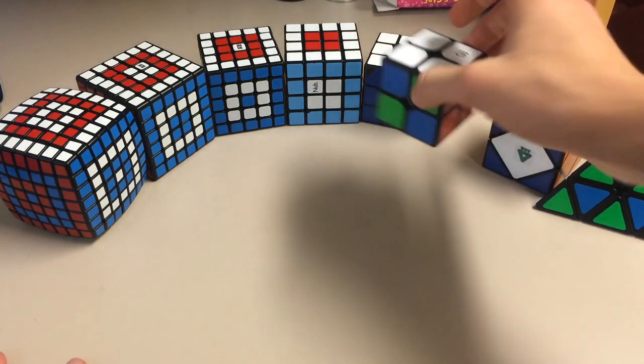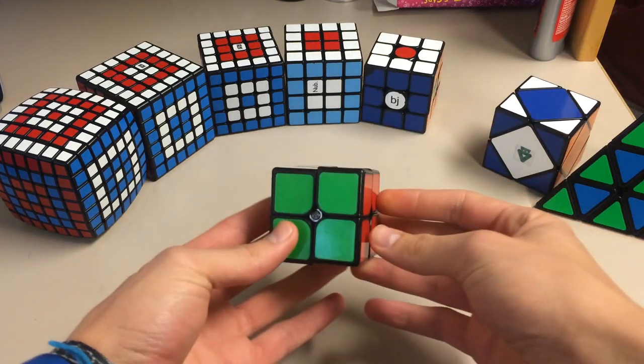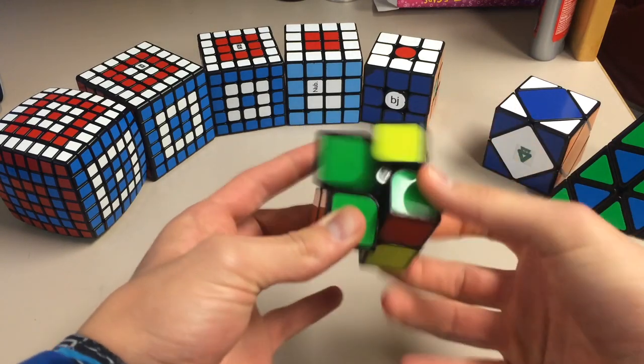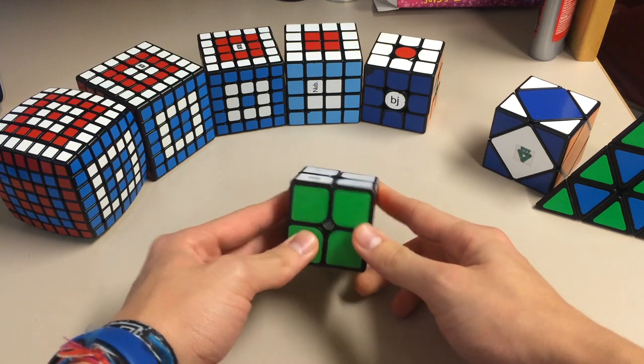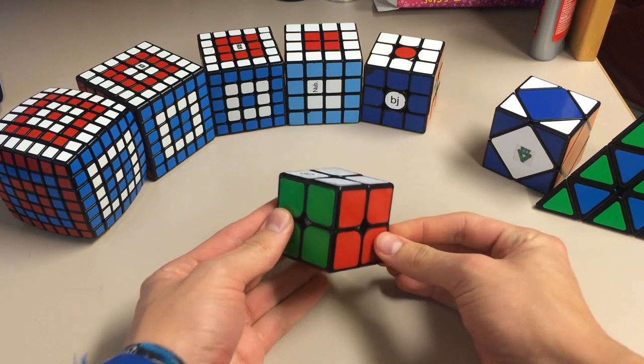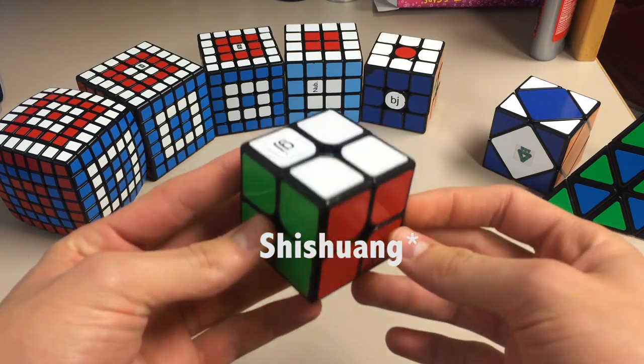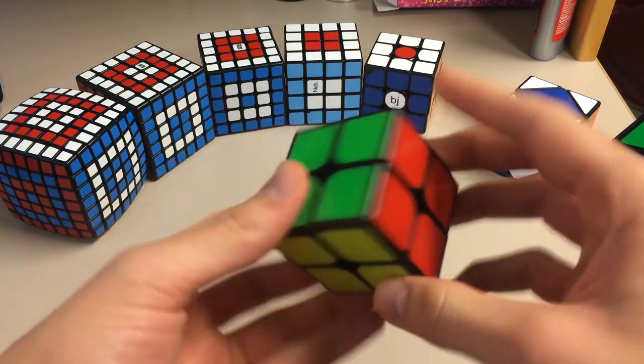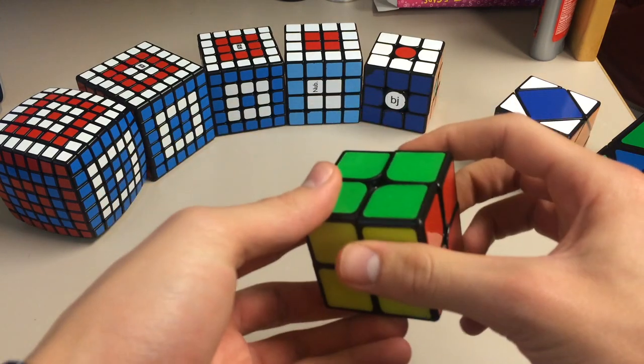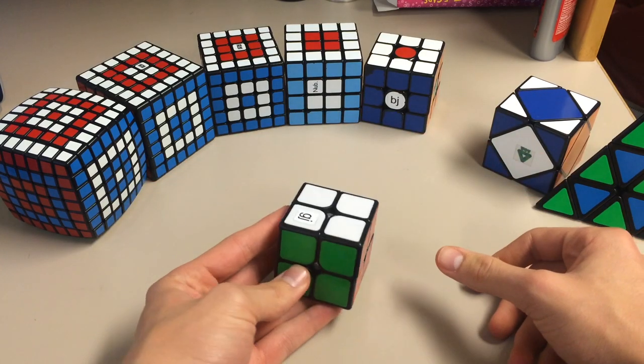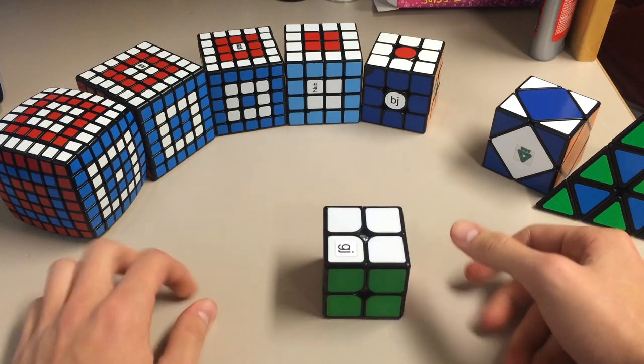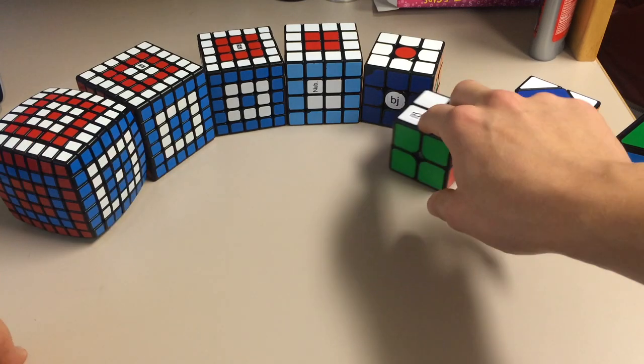I'm going to start with 2x2. My 2x2 main is the Fangshi Shuangren, and I have received the new Fangshi 2x2, which might be out before or after this, but I prefer the Fangshi. This is the 50mm tiled one. I've gotten used to the colors on these. The green and yellow looked a bit similar at first, but I've learned to love it. It's a great cube to have, and it's been my main for a long time, even since last February.